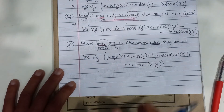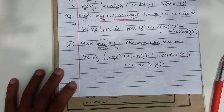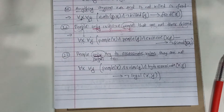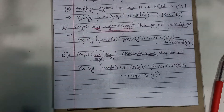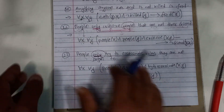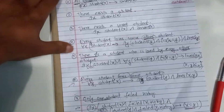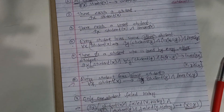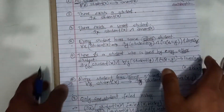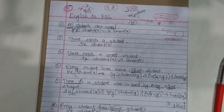This is how we convert our English sentence into FOL — First Order Logic. We convert our English sentence into FOL.